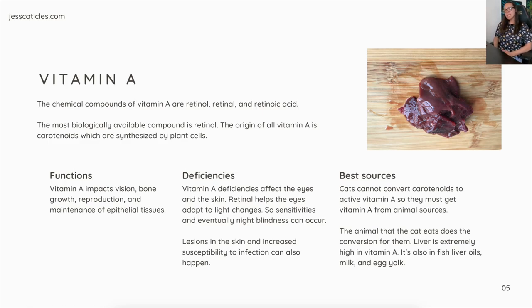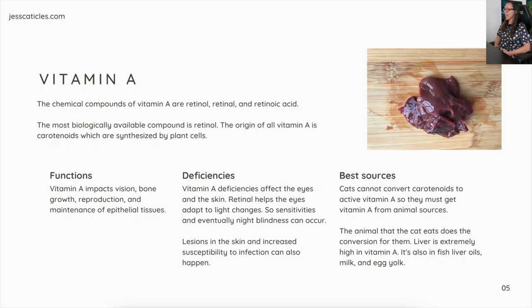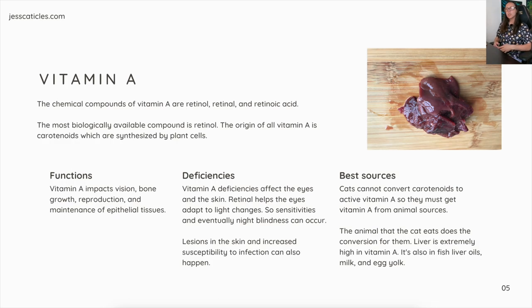Best sources: cats cannot convert carotenoids to active vitamin A, so they must get vitamin A from animal sources — another reason they cannot be vegan. The animal the cat eats does the conversion for them. The prey eats plants, converts carotenoids to retinol, the active form of vitamin A, then the cat eats the animal and gets the correct version. Liver is extremely high in vitamin A, as are fish liver oils like cod liver oil, milk, and egg yolks.